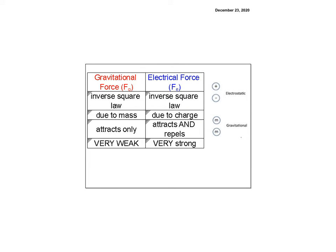We know they both follow the inverse square law. That means if you go twice as far away, it's one-fourth the force, three times, one-ninth the force, four times, one-sixteenth the force. That is true for both gravity and for electrical force.